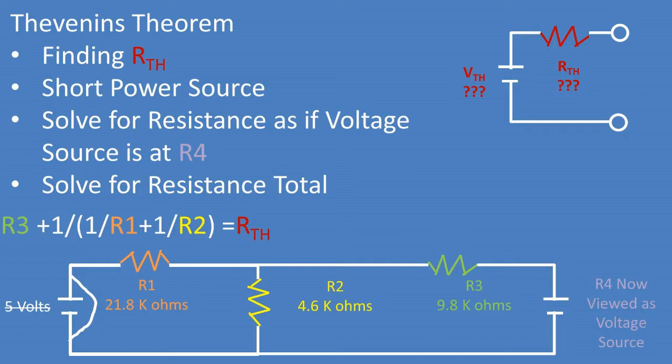So to get the total resistance, we must take resistor 3 plus 1 over (1 over resistor 1 plus 1 over resistor 2). After plugging in all of our resistor resistance values, we get a Thevenin circuit resistance of 13.4 kilo ohms.